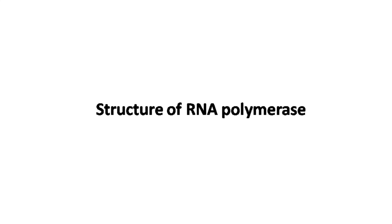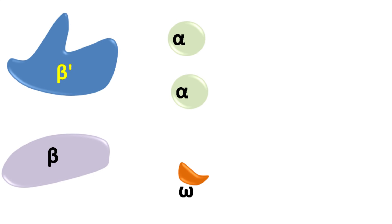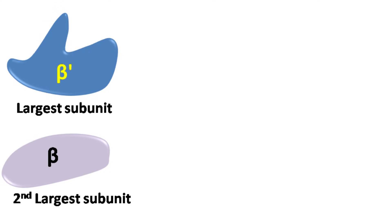The bacterial RNA polymerase has five subunits: beta prime, beta, alpha 1, alpha 2, and omega. The beta prime is the largest subunit and has the active site for RNA synthesis. The beta is the second largest subunit involved in RNA synthesis.